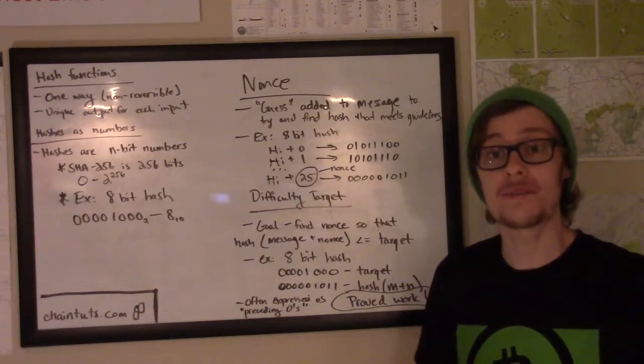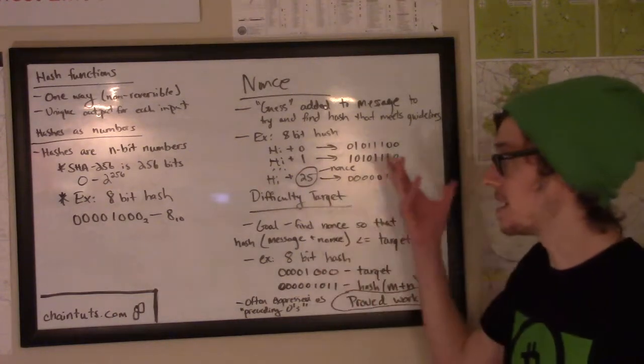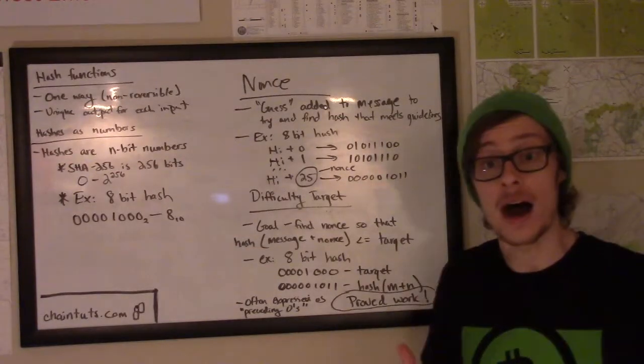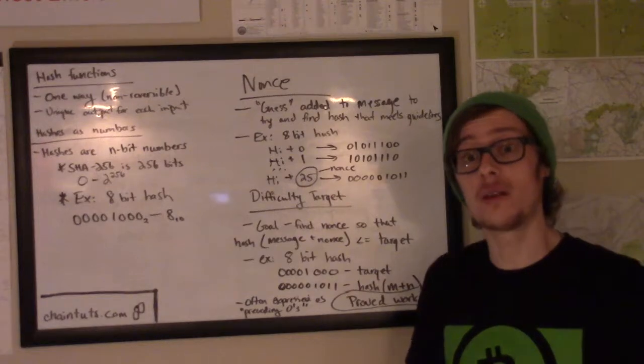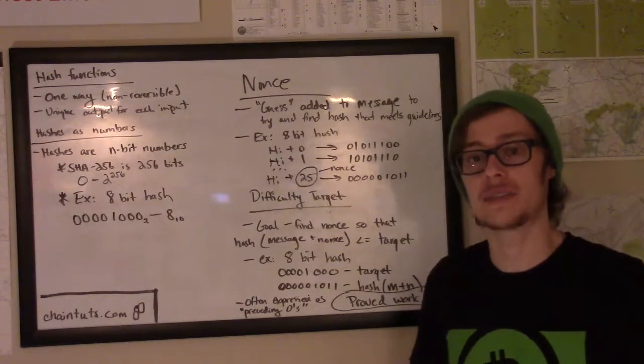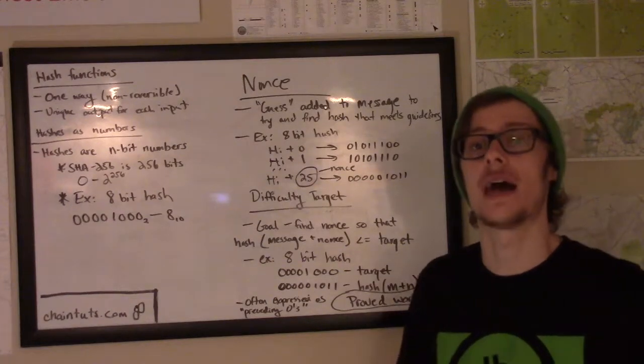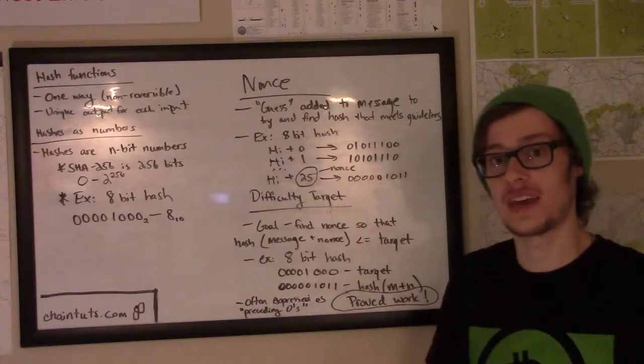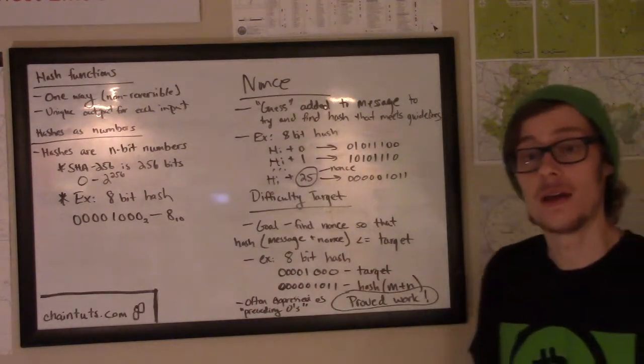What's interesting about this is the more preceding zeros that you're looking for, in other words the lower the difficulty target number, the harder it is to find the guess that gives you a hash output that's less than that difficulty target. If you have some difficulty target where you would only see one or two zeros preceding the hash output, it's pretty easy to compute a guess or a nonce that gives you that output. However, the smaller the difficulty target gets, the harder it is and the more computation has to be done to find a nonce value that gives you a hash resulting in a number that's less than that difficulty target.